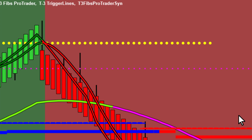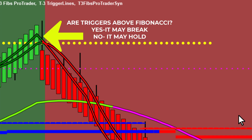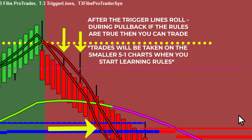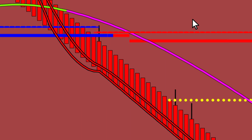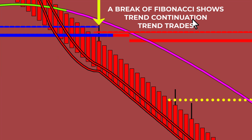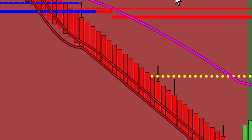When the triggers are past the yellow dots, wait until the trigger lines cross down. You can now take short trades per the next-gen rules until the price reaches Fibonacci support. As always, when the trigger lines are strong, a Fibonacci area may break. The breakout will be apparent when the trigger lines are located well below Fibonacci. You will then be able to confidently trade the continuation of the downtrend after the next-gen trend trade rules are valid.